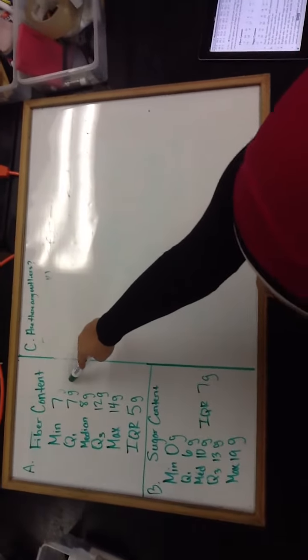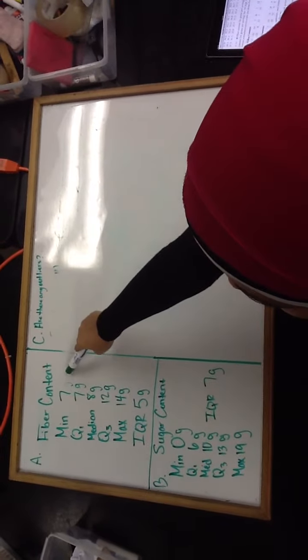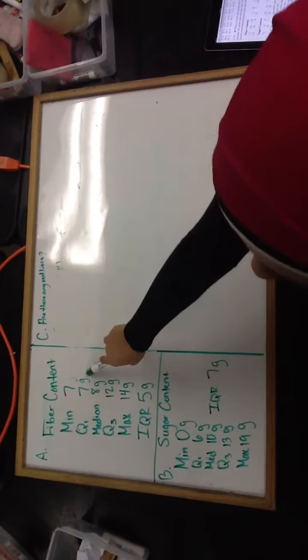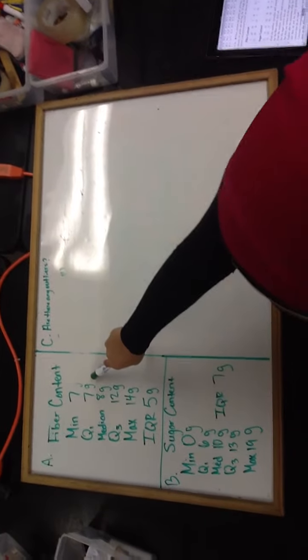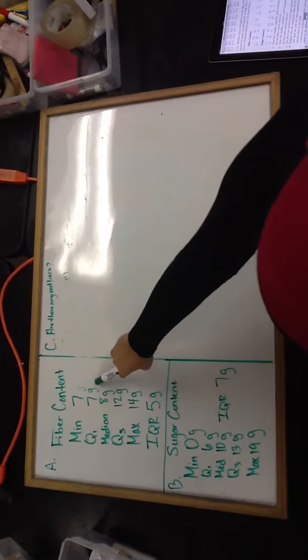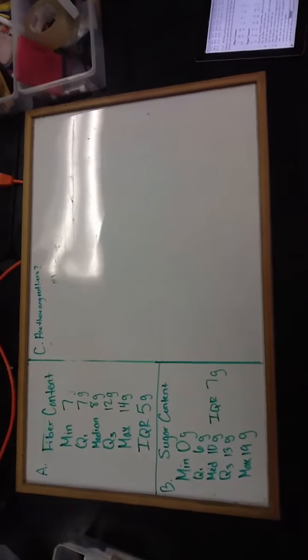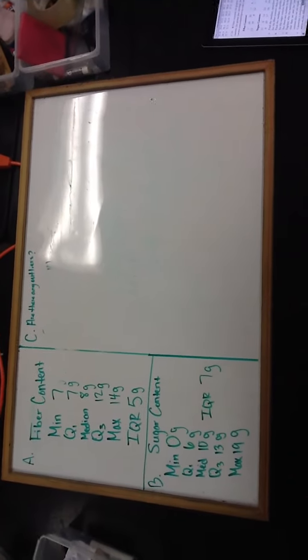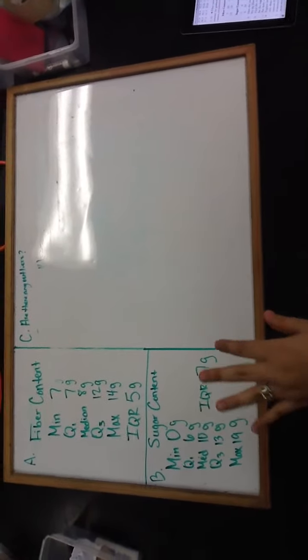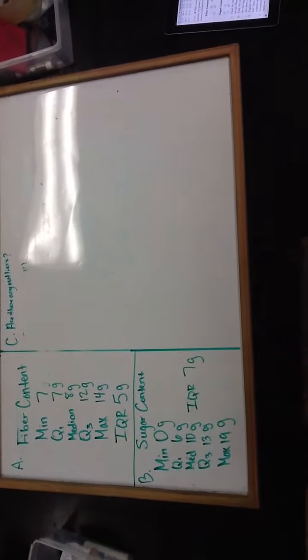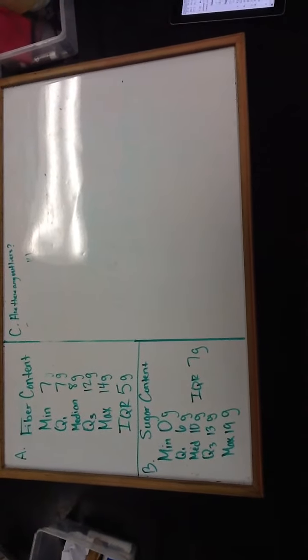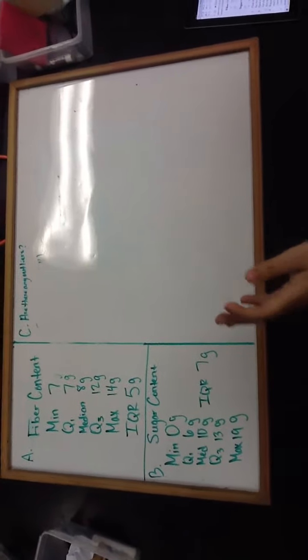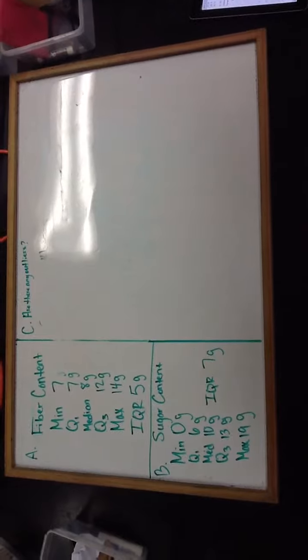You can see over here, the minimum value for fiber content is 7 grams as well, and so is the lower quartile for fiber content 7 grams. This is because the lower quartile consists of the lower 25% of the data, and 7 grams is 30% of the data. So it is both the minimum value and the lower quartile value.